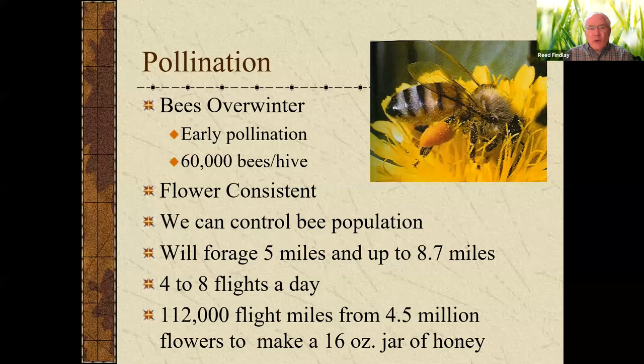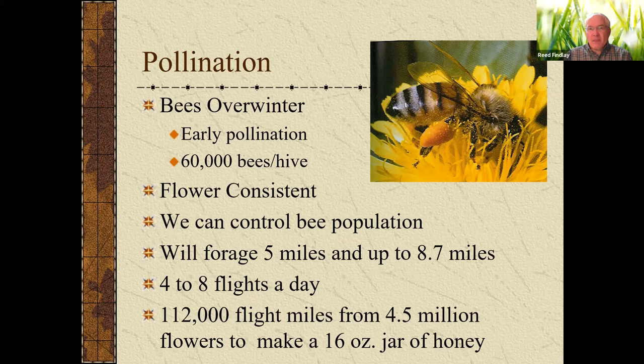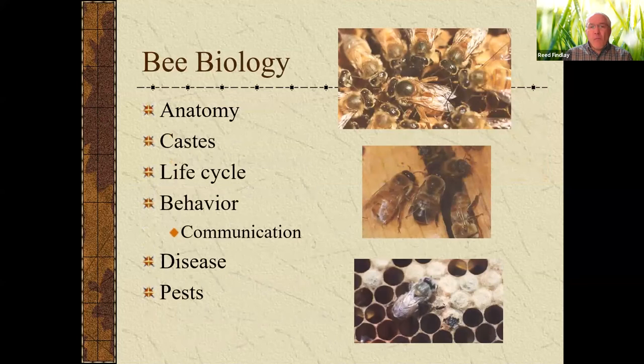Bees forage for around five miles and take four to eight flights a day. It takes a lot of flights and a lot of flight miles to produce a 16-ounce jar of honey — the equivalent of a flight to the moon and back to produce that honey. Bees are really hard workers and get a lot done for us.